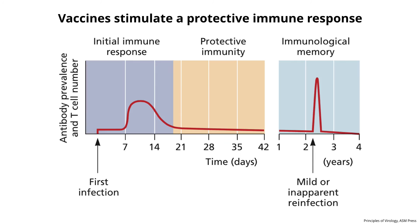You have seen this slide before. It is a generalized version of an immune response, either antibody or T cell response. After seeing an infection or an antigen for the first time, you get an initial immune response, which takes a week or two to develop. And then you have, for a long period of time, protective immunity. The levels of antibodies and T cells are very low. But if you then encounter the pathogen again, you have a rapid immune response, which we call memory. This is what vaccines do — they tap into memory without giving you the initial disease associated with the first infection.